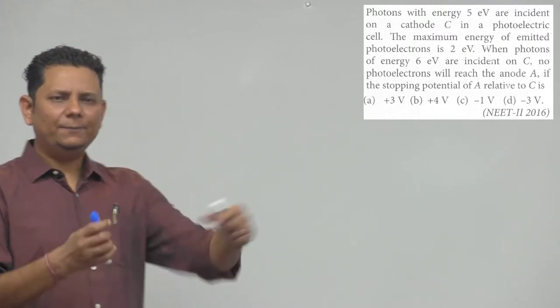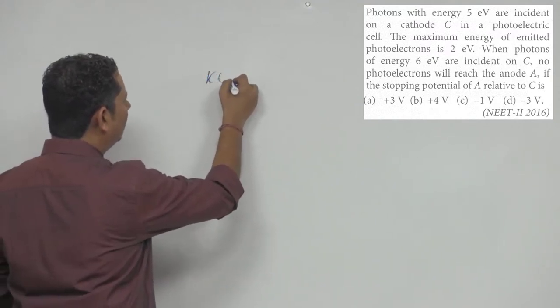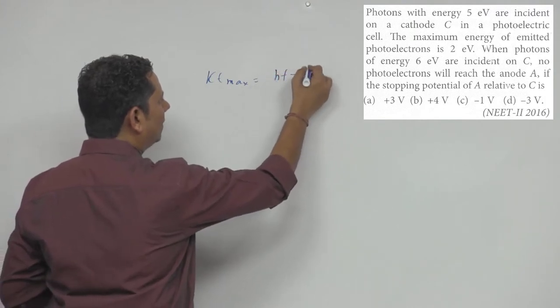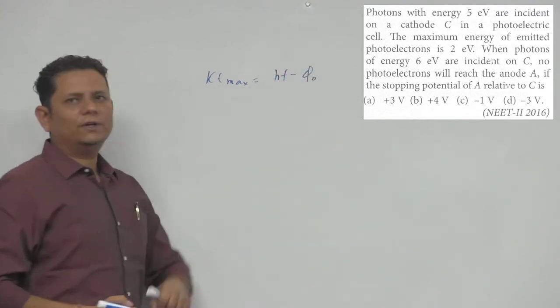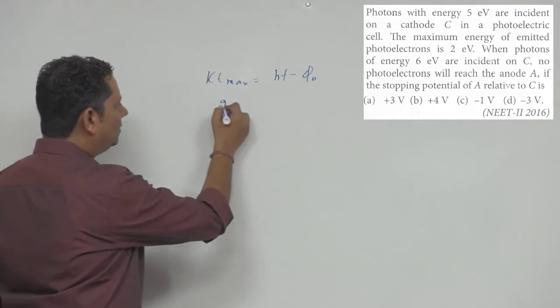Simple question. So the first thing is that Einstein's equation is: kinetic energy maximum is equal to hf minus phi naught work function. Now in this case, in the first case, the kinetic energy is 2 electron volt, hf energy is 5 minus phi naught,